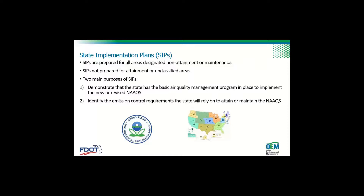State Implementation Plans are prepared for all areas designated non-attainment or maintenance, and are not prepared for attainment or unclassified areas. The two main purposes of the SIP are to demonstrate that the state has the basic air quality management program in place to implement new or revised standards, and to identify the emission control requirements the state will rely on to attain or maintain the standards.